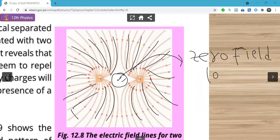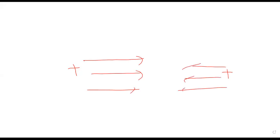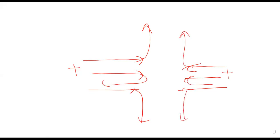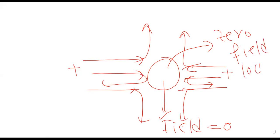Yeh zero field location kyun hota hai? Kyunki positive charges se lines bahar niklenge — woh kahin par bhi ek doosre ke saath intercept nahin kar sakte. Positive se bahar niklein, phir woh upar ki taraf jaenge, neeche ki taraf, aur jo space nazar aa raha hai wahan field ki value nahin hai — kyunki wahan lines hi nahin hain, yani electric field zero. Jis point par field zero hoti hai us point ko hum kya naam dete hain: zero field location. Yeh zero field location kya hai — ise mazeed discuss karenge.